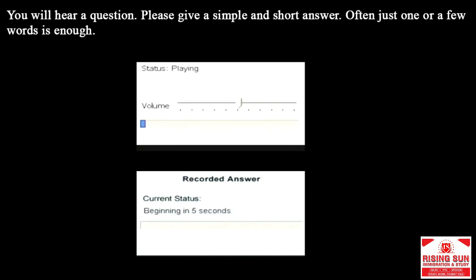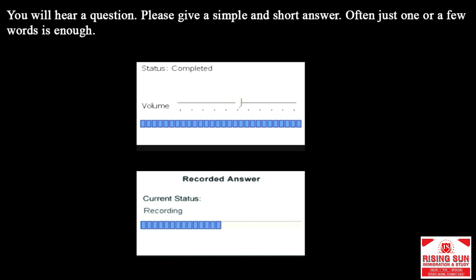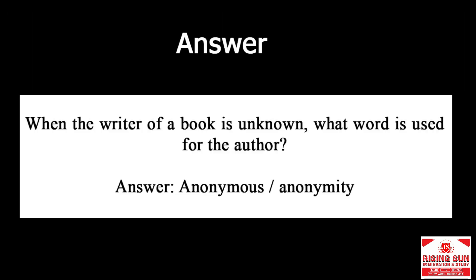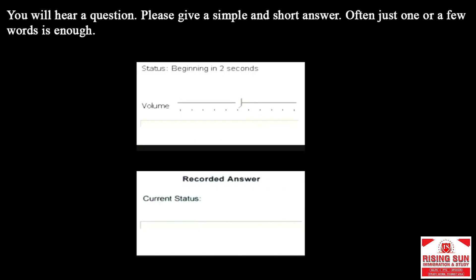When the writer of a book is unknown, what word is used for the author? Answer: anonymous, anonymity.